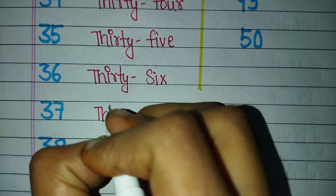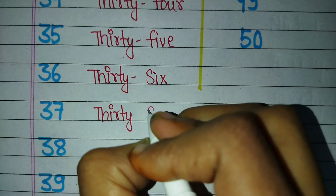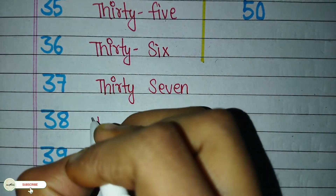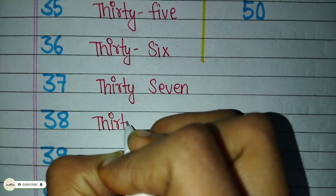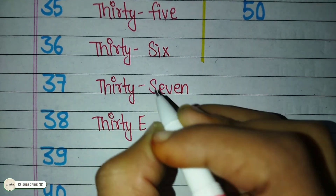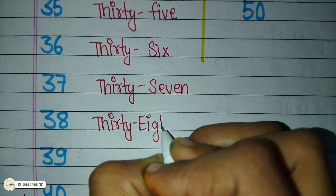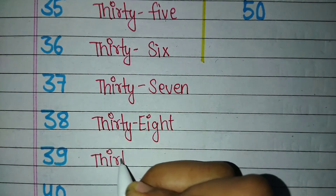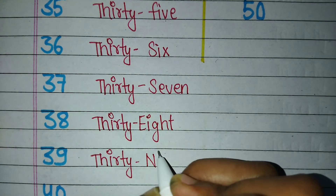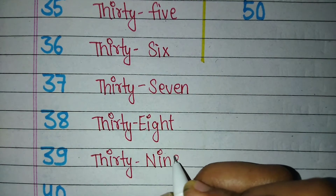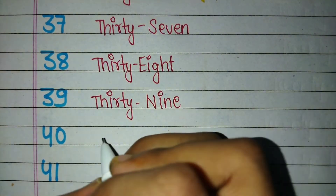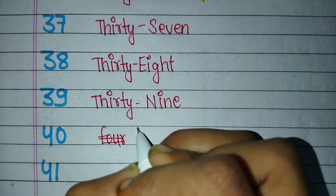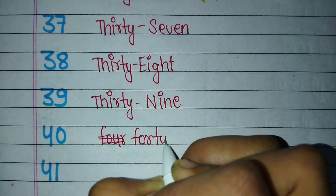Thirty-seven — T-H-I-R-T-Y — 30, S-E-V-E-N — 7 — 37. Thirty-eight — T-H-I-R-T-Y — 30, E-I-G-H-T — 8 — 38. Thirty-nine — T-H-I-R-T-Y — 30, N-I-N-E — 9 — 39.